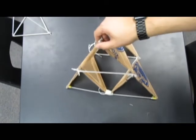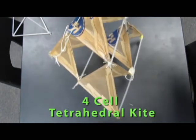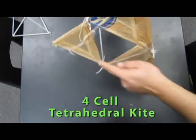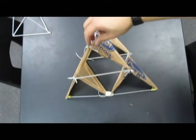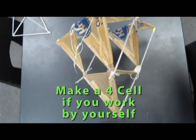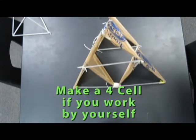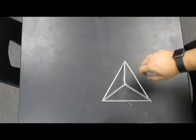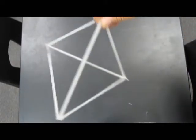Now, this is a four-cell tetrahedral kite. You'll see one, two, three, four. And these things can get pretty big. Now, if you're working individually, you're going to make a four-cell tetrahedral kite. One of the first things that we need to do is we need to talk about how to make this.